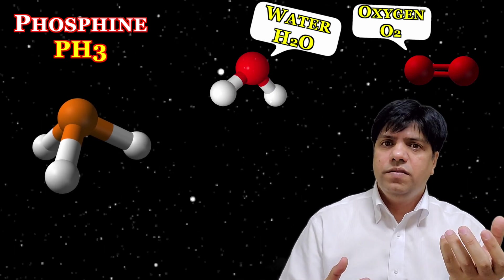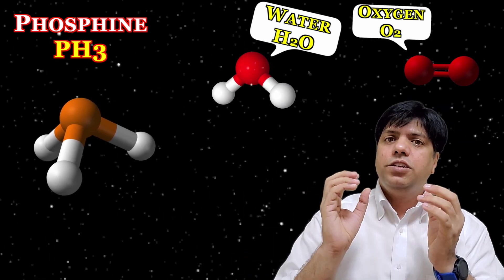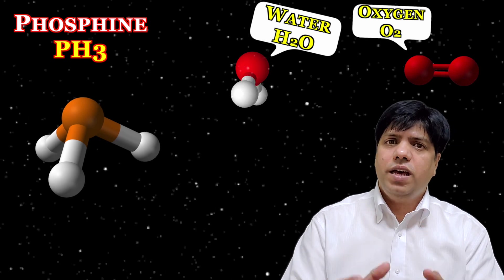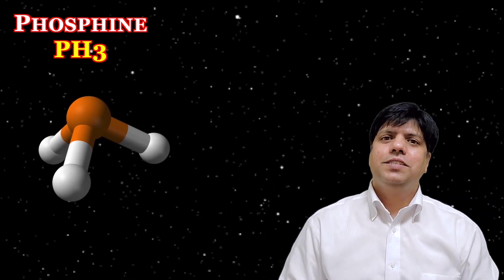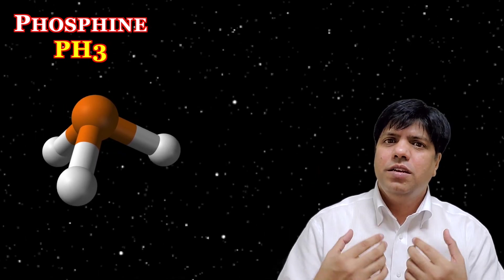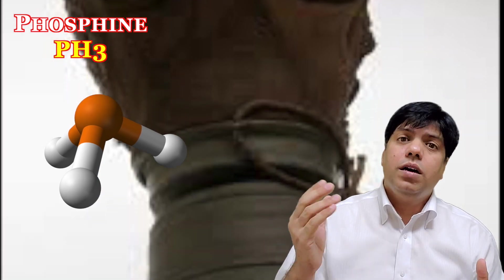For example water and oxygen, these are very good biosignatures, bio life signatures. These compounds of life are called biosignatures. Now what's very interesting about phosphine is phosphine actually kills us humans.